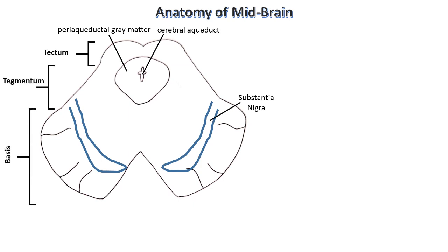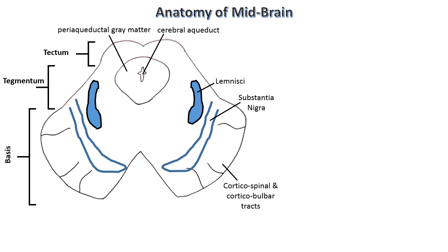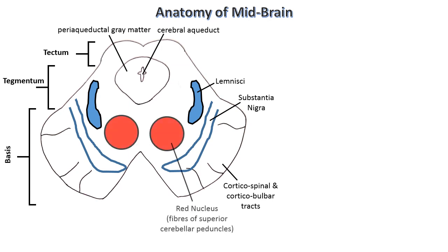The concept is: the basis contains tracts which are going down, so here it will be the corticospinal tract and corticobulbar tract. The tegmentum will contain ascending tracts, so here we have our lemnisci — there are four lemnisci: lateral, spinal, trigeminal, and medial. The red nucleus is also present in the tegmentum, which contains the fibers of the superior cerebellar peduncle.